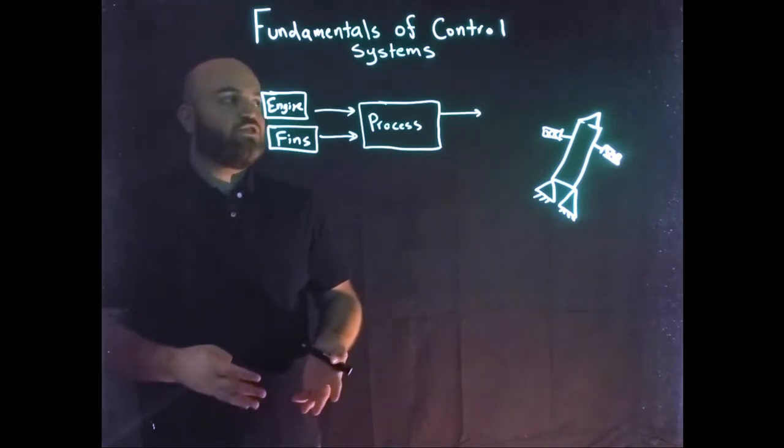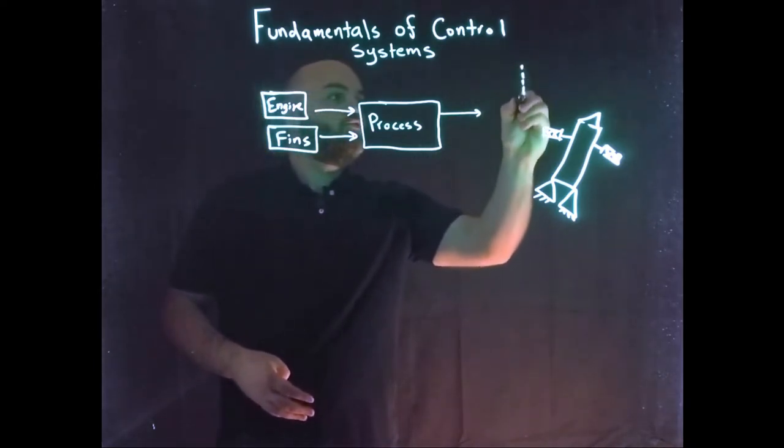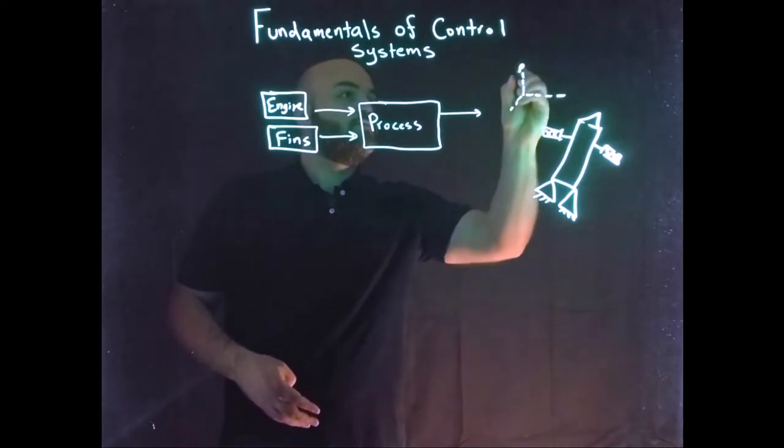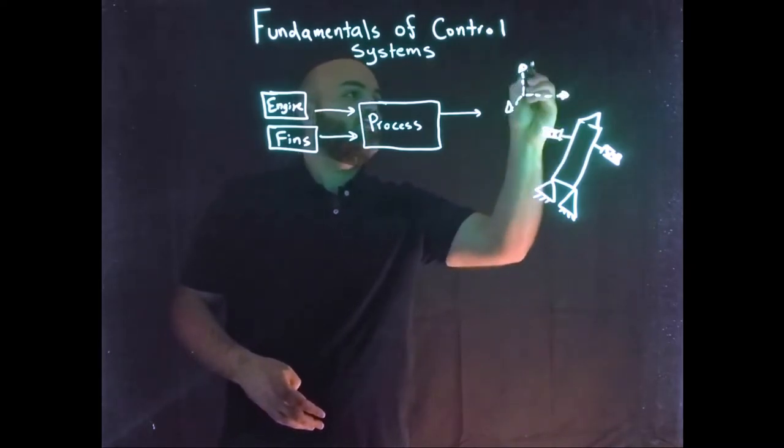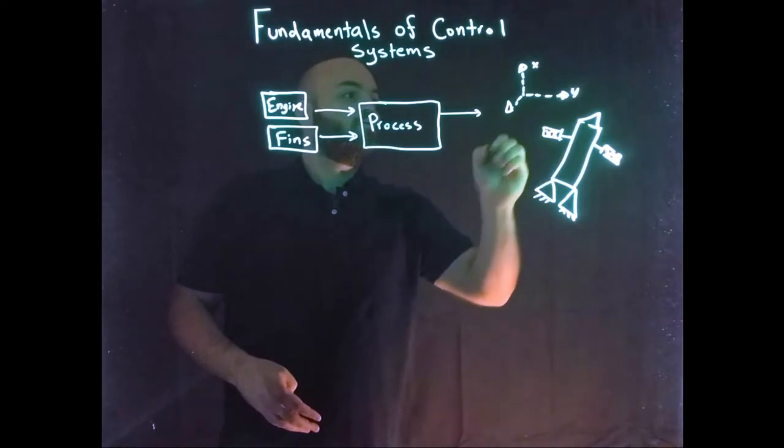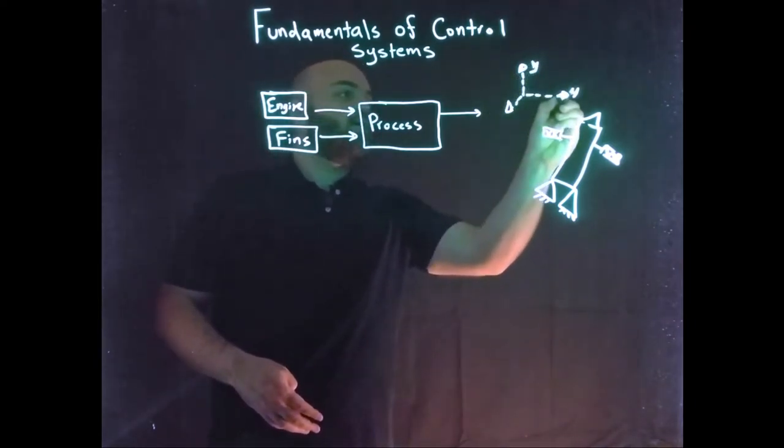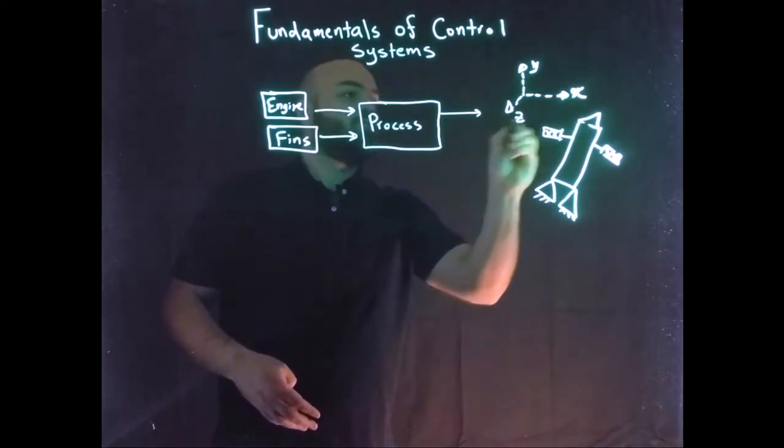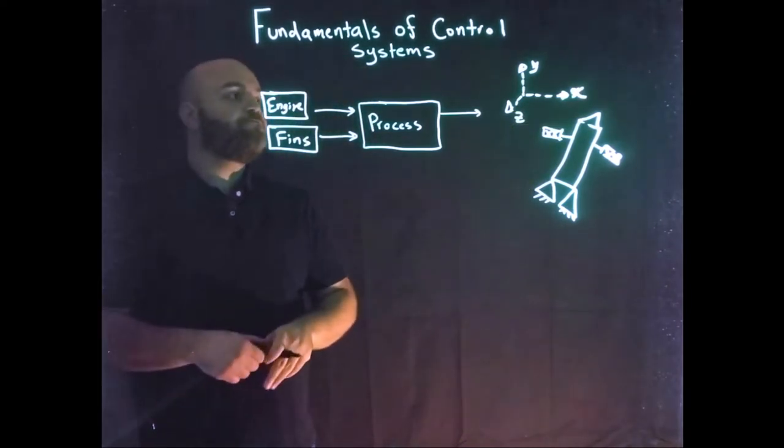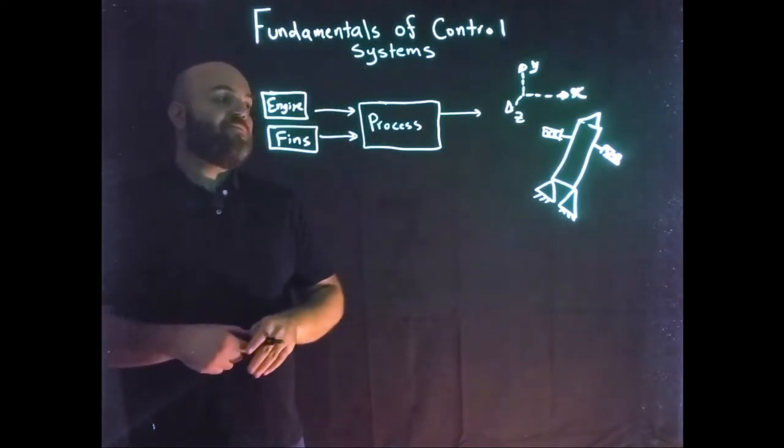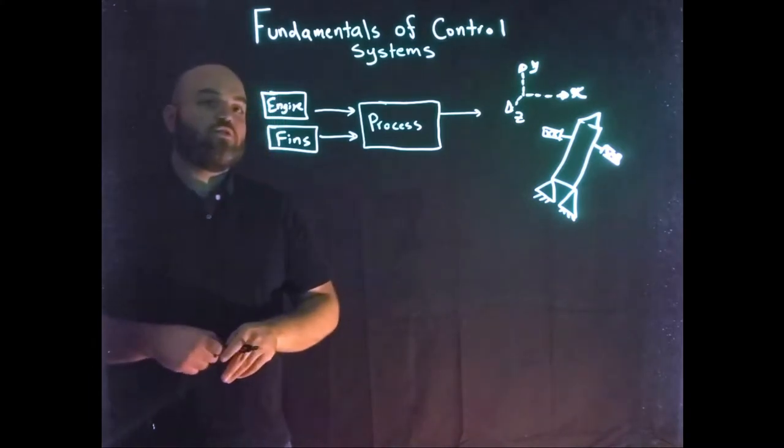Its position and orientation in space relative to some coordinate system. Let's say we have a coordinate system of x, y - actually, this is y, this is x, so that we can be right-handed coordinate system. So x, y, and z, and we have the position and orientation of the rocket.